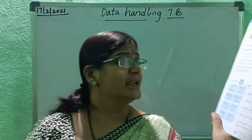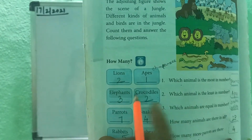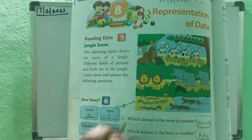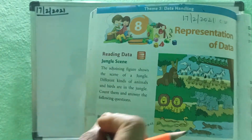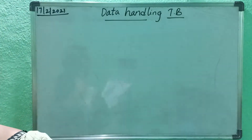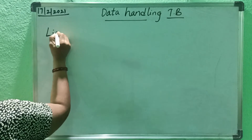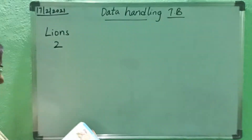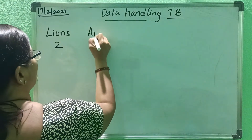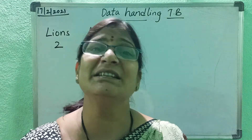Here in the blue color box, they gave the names of the animals. Now, you have to count and write how many of each animal there are. I will write on the board. Lions — how many lions are there? Two. Next — apes. Apes means chimpanzee. How many? Only one. Elephants — how many elephants can you see? Three. And crocodiles — how many? Two.